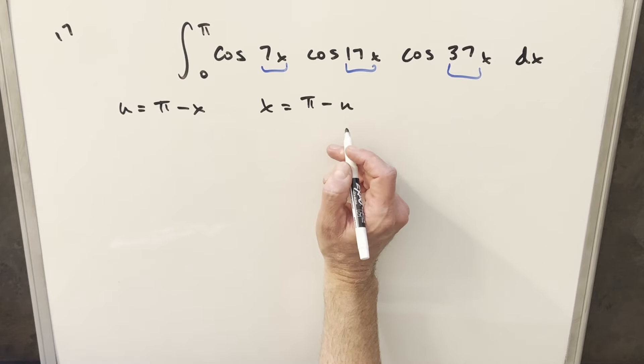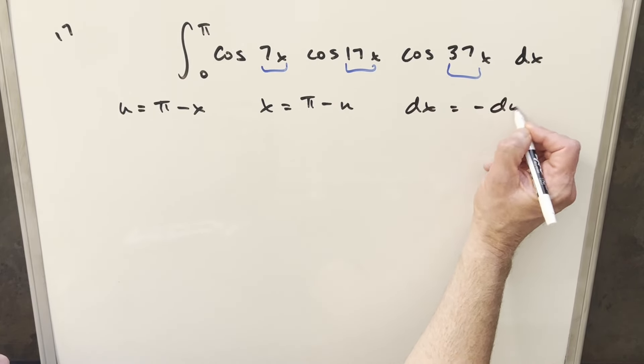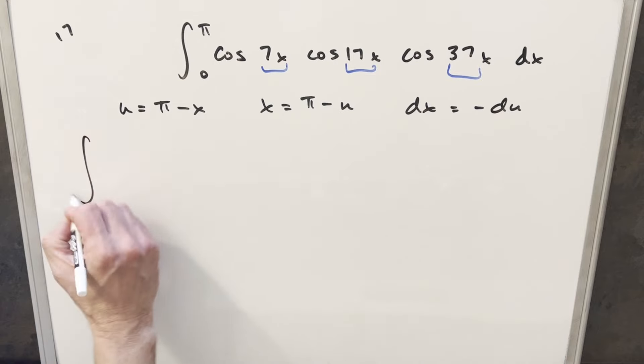It's just rearranging this thing a little bit. So we're going to have x equals pi minus u. Take a derivative, dx equals minus du.